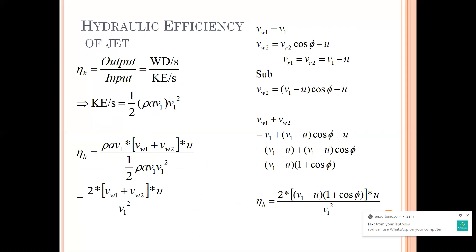So your hydraulic efficiency is rho * A * v1 * (vw1 + vw2) * u divided by the kinetic energy per second. I can simplify it by cancelling rho * A * v1 from both sides, and 2 goes to the numerator. So I will get eta_h = 2 * (vw1 + vw2) * u / v1^2.